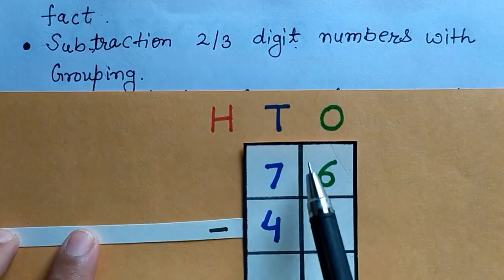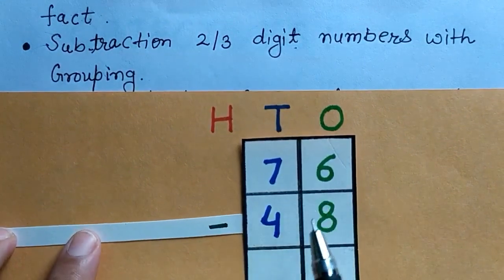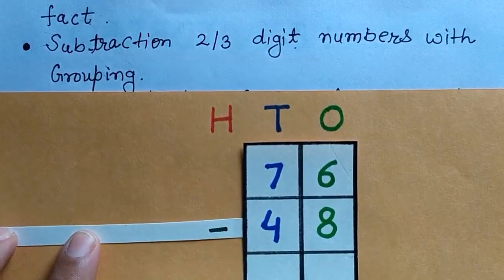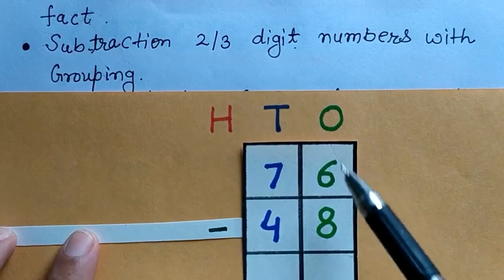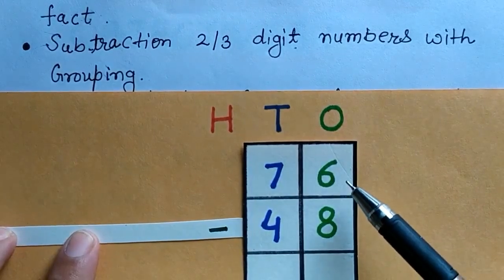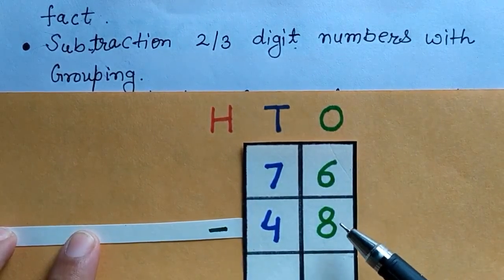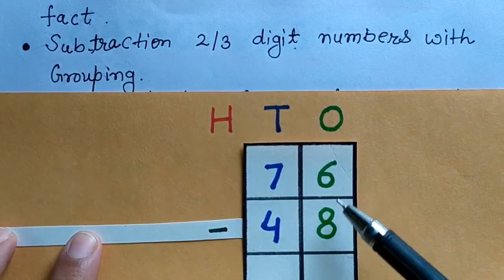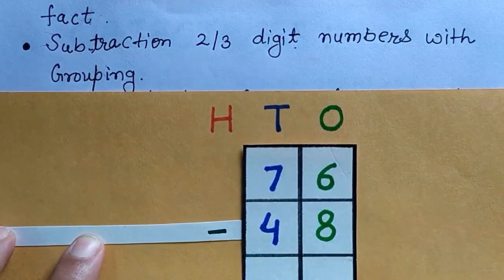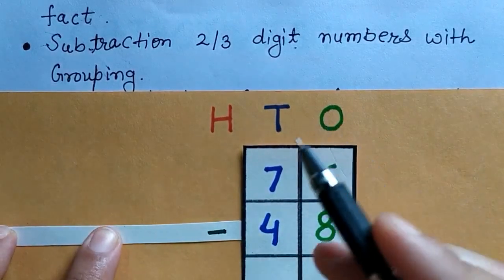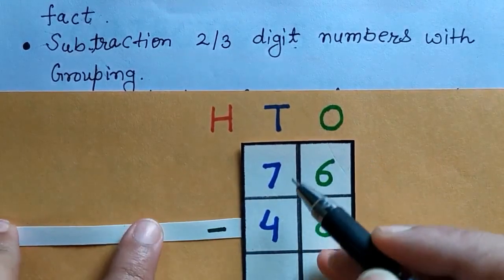There are 2 numbers: 76 and 48. We have to subtract 48 from 76. At ones place there are 6 and 8. We have to subtract 8 from 6. This is not possible, so we will borrow from 7.